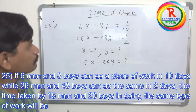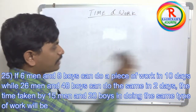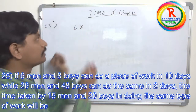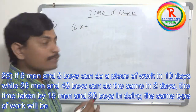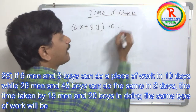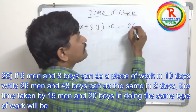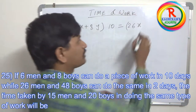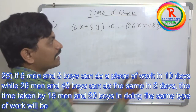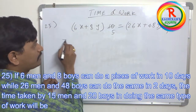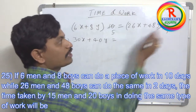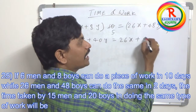Here is the shortcut: instead of fractions, take six X plus eight Y and multiply by ten — since they complete work in ten days. This equals twenty-six X plus forty-eight Y multiplied by two — since they complete in two days. After multiplying: thirty X plus forty Y equals twenty-six X plus forty-eight Y.